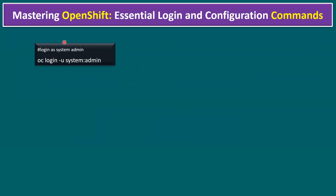So let's jump into today's topic — mastering OpenShift essential login and configuration commands. In our previous session I talked about how to install Red Hat OpenShift on vSphere platform using the IPI (Infrastructure Provisioned Installation) method. We already deployed the OpenShift cluster. The OpenShift cluster can be accessed in two methods: one is using the graphical user interface (GUI), and another is the CLI — command line interface.